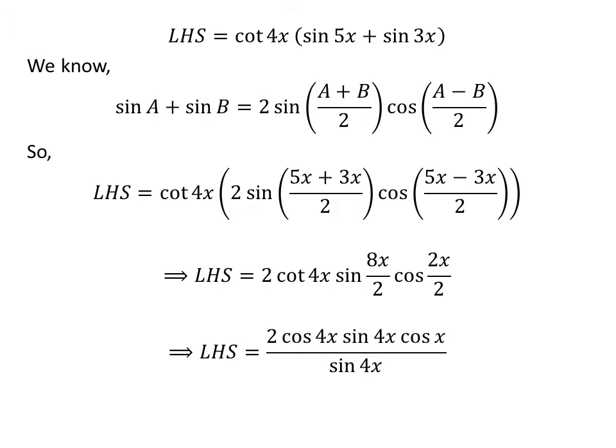We know cotangent of 4x equals cosine of 4x upon sine of 4x. Cancelling the common factor 2 in the numerator and denominator of each fraction gives the left-hand side equal to 2 times cosine of 4x times sine of 4x times cosine of x upon sine of 4x. Cancelling the common factor sine of 4x in the numerator and denominator simplifies this expression further.